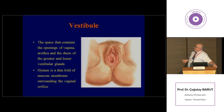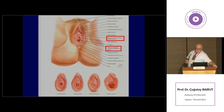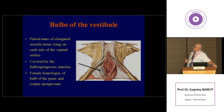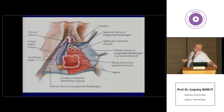The vestibule is the space that contains the openings of the vagina and the ducts of the greater and lesser vestibular glands. Here we can see the openings of the greater vestibular glands. The bulbs of the vestibule are paired masses of erectile tissue lying on each side of the vaginal orifice, both covered by the bulbospongiosus muscles. If we remove them, we can see these paired structures, and the placement of the bulbs is shown here.